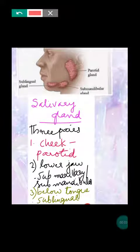Along with the alimentary canal, digestive glands are also present in the digestive system. These digestive glands include the salivary gland, liver, and pancreas. These are the main digestive glands. The first one is the salivary gland — three pairs of salivary glands are present.